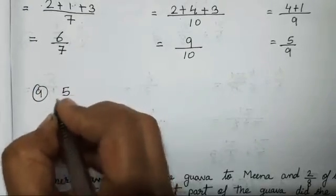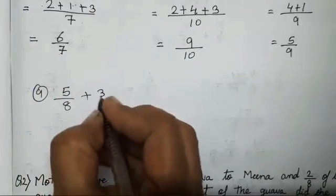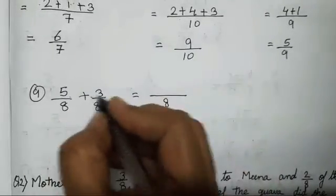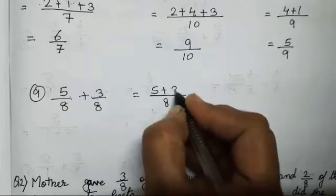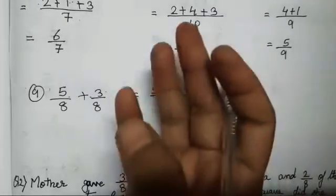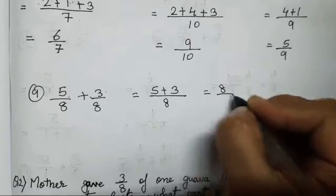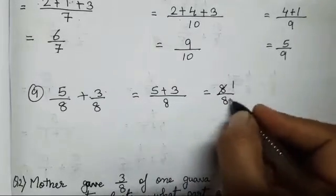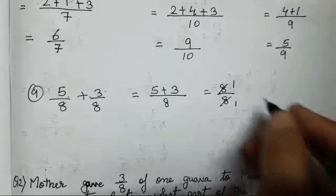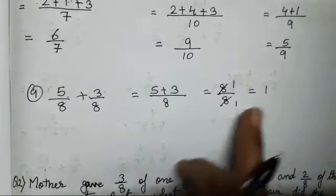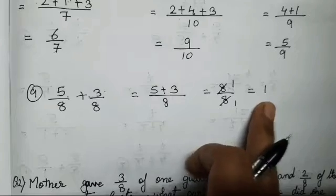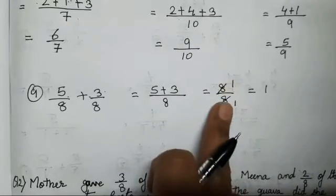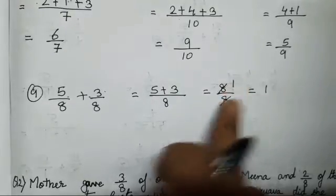The last sum, the ninth, is 5 upon 8 plus 3 upon 8. We will write 8 once. 5 plus 3 is 8 upon 8. This can be reduced — 8 ones are 8 — so the answer is 1. If the numerator and denominator of a fraction are equal, the fraction is equal to 1.